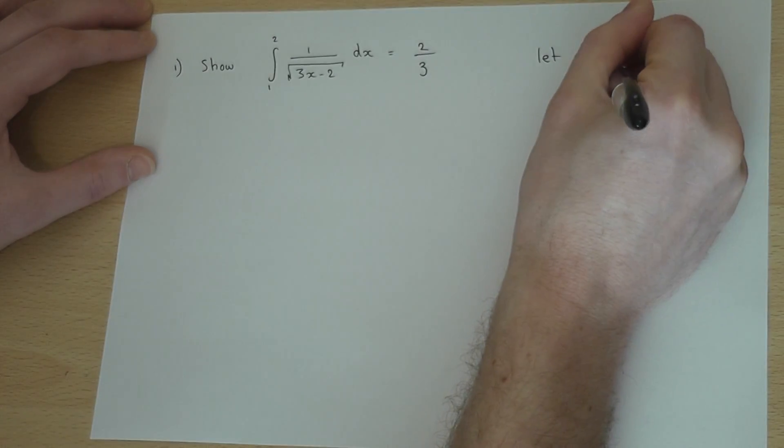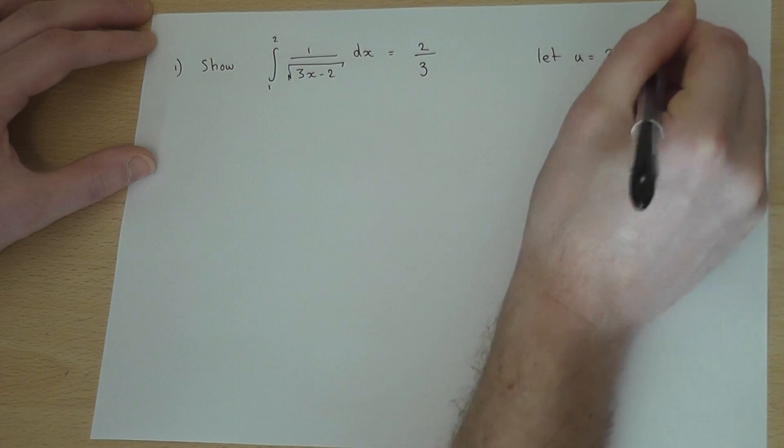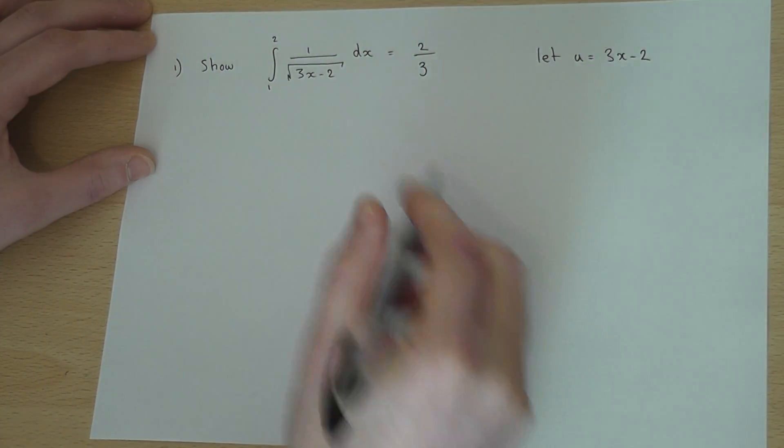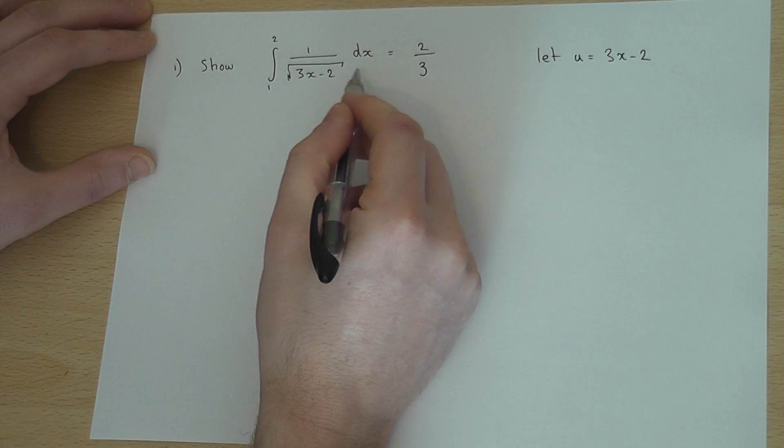So if I let u equal 3x minus 2. Now, we have a dx there, so I need a du, so I'm changing the variable.